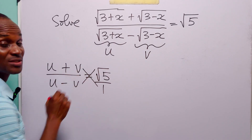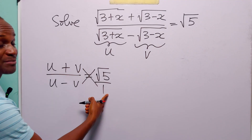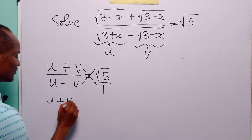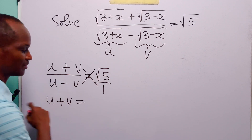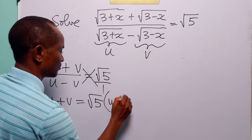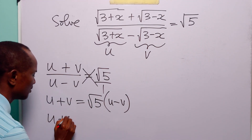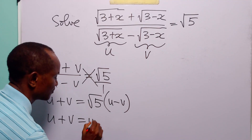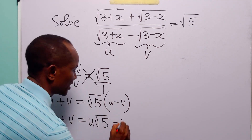The next thing we are going to do is cross multiply. When we do that we have that u plus v times 1 is equal to root 5 times u minus v. Opening this bracket, we have that u plus v is equal to u times root 5 minus v times root 5.